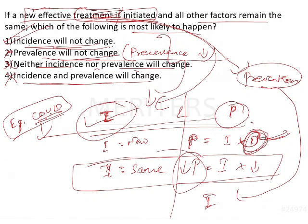So the only option left out is incidence will not change. This is the answer for this question. Because treatment is initiated, effective treatment is initiated, duration gets reduced, so prevalence gets reduced. In case instead of treatment, if there is any preventive method or prophylaxis initiated, incidence will also get changed. The answer is incidence will not change.